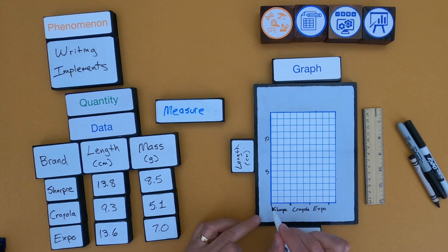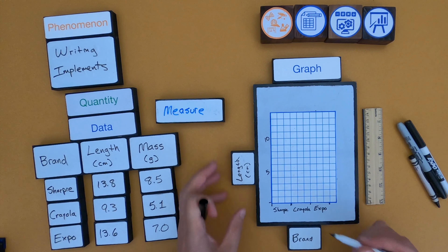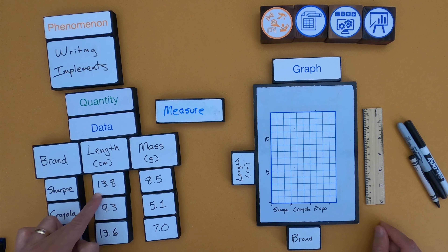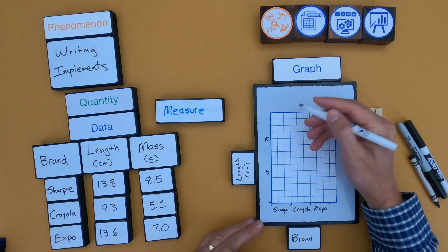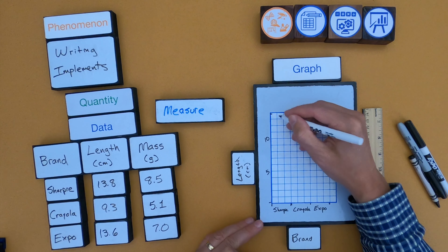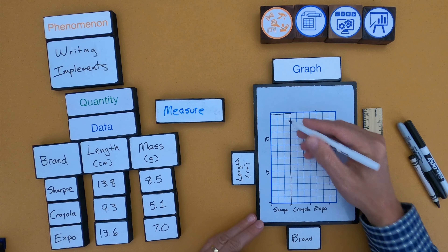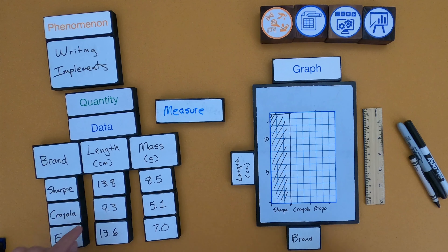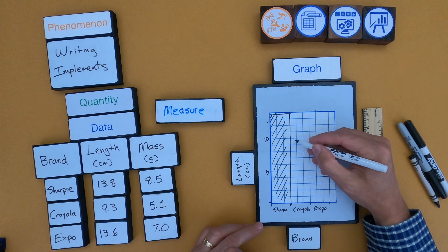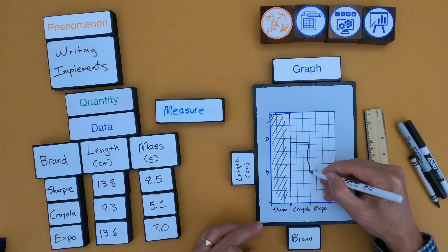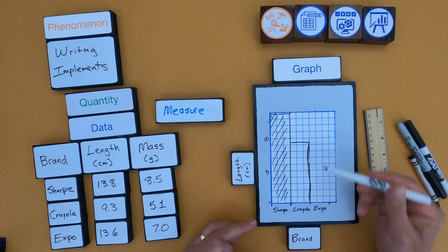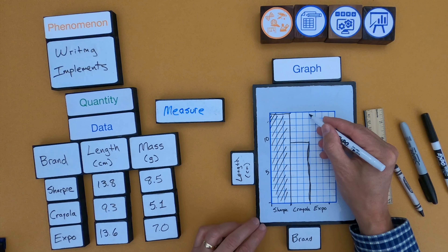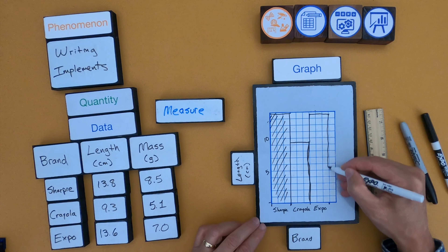I'm going to put length on the y-axis and brand on the x-axis. Now I'm just reading my data. The Sharpie is 13.8, so I go to 10, 11, 12, 13 — and 13.8 is right near the top. I draw a line across and then down. The Crayola's length is 9.3, so just under 10. And the Expo is 13.6, also near the top but not quite as high as the Sharpie.